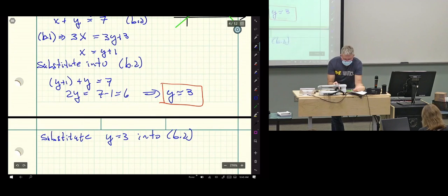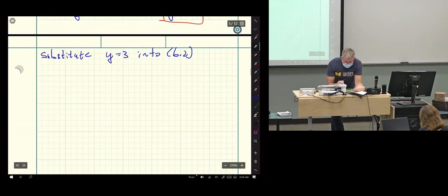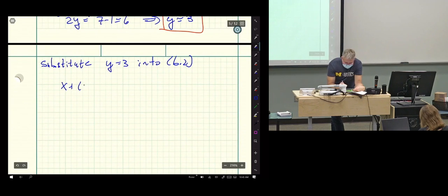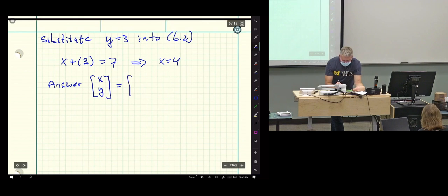And so what do I do there? I'll have x plus 3 equals 7. What is that? Bad imitation of Chinese character? And so x equals 4. And so the answer, which eventually we're going to want to write as x, y, and I'm just going to stack them up like this, is 4 comma 3. So that's the answer.